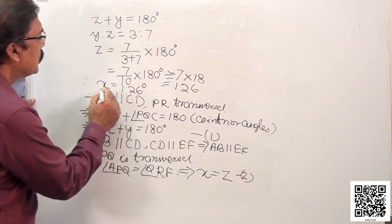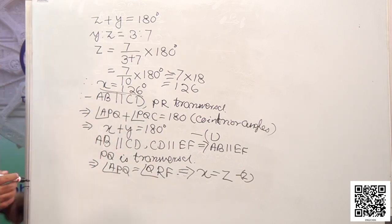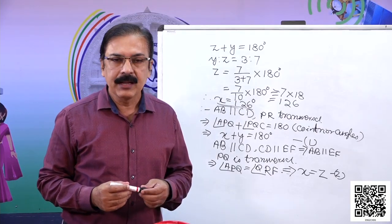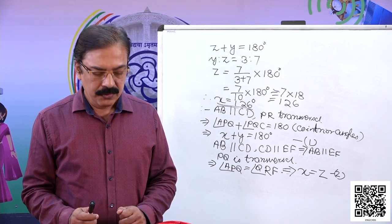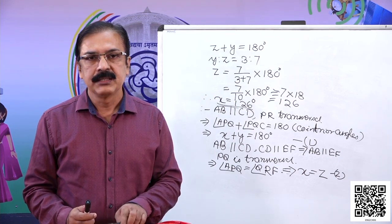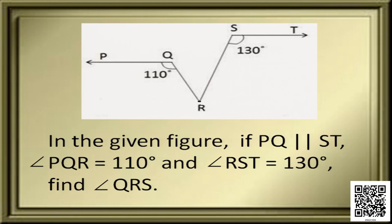So that is our solution — by applying the theorem of lines parallel to the same line and the alternate angle theorem, we could solve it. Here is the next figure: PQ is parallel to ST, angle PQR is 110 degrees, and angle RST is equal to 130 degrees. What is the measure of angle QRS?